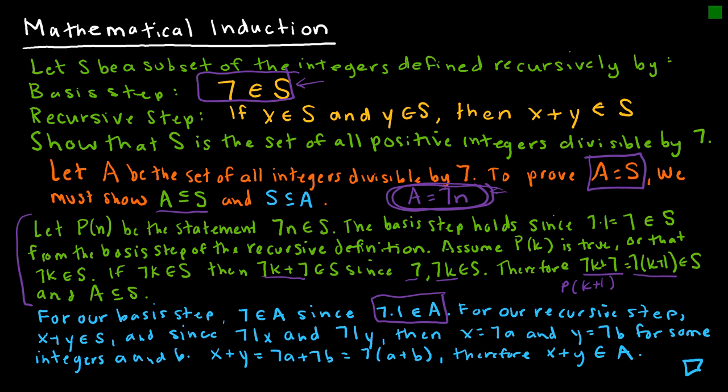For the recursive step, we know x + y belongs to S. Since 7 divides x and 7 divides y, I can write x = 7a and y = 7b for some values a and b. That means x + y = 7a + 7b = 7(a+b), which meets the definition, and therefore x + y is an element of A. I've shown both directions, and therefore proved this by mathematical induction.